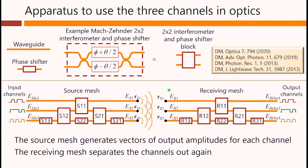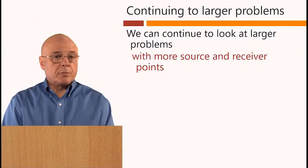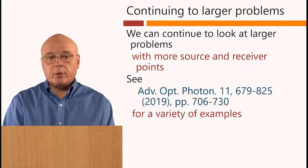So this can generate our point sources, as it were, from an individual channel, and we can have three different orthogonal such vectors of outputs here. Similarly, this receiving mesh can take vectors of inputs, and it can sort them out one by one to these output channels.